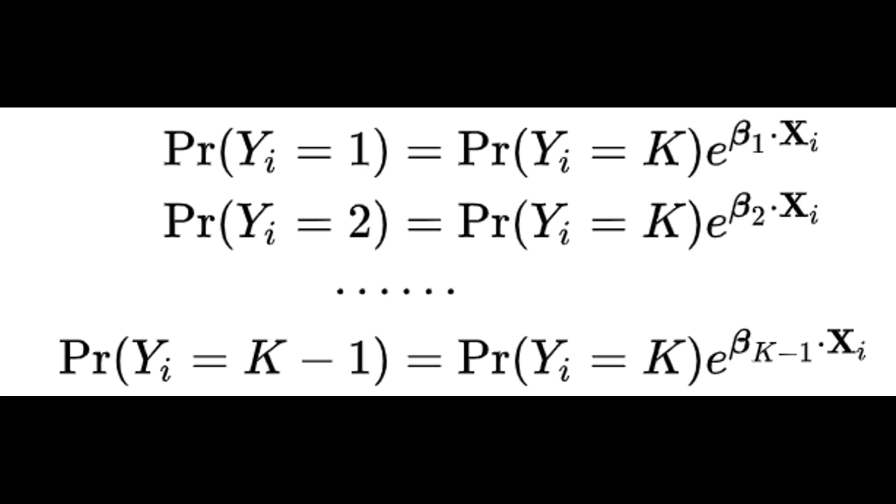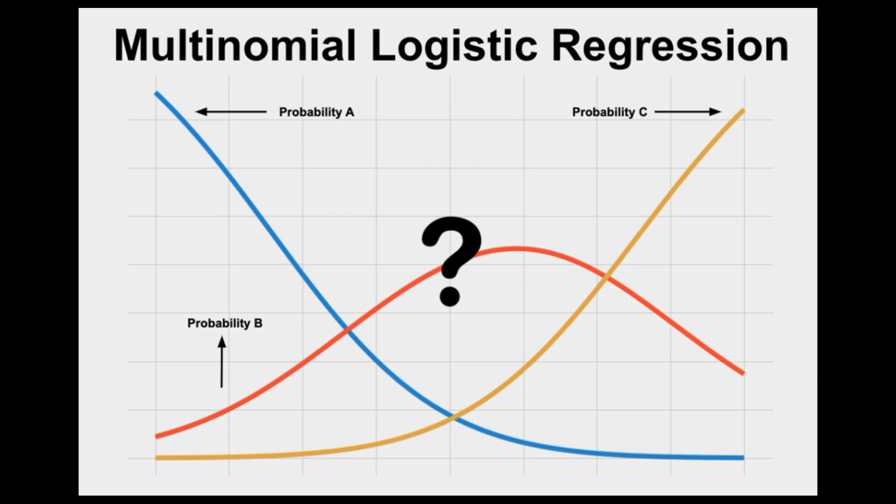The equations of multinomial logistic regression involve multiple sets of coefficients, one for each class. Each set of coefficients represents the relationship between the predictor variables and the log odds of belonging to a particular class.